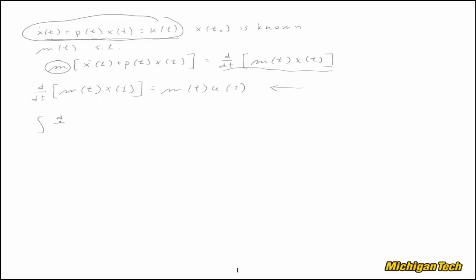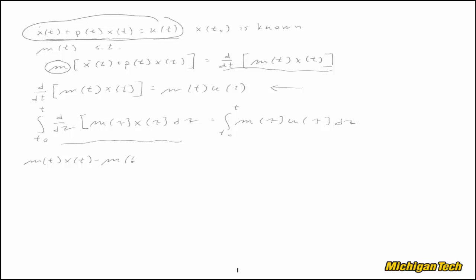We integrate d/dτ of m(τ)·x(τ) dτ from t₀ to t on both sides. For the left-hand side, we can apply the fundamental theorem of calculus and write it as m(t)·x(t) minus m(t₀)·x(t₀), because the differentiation undoes the integration. So m(t)·x(t) minus m(t₀)·x(t₀) equals the same integral on the right-hand side.